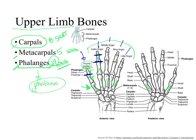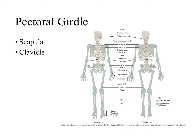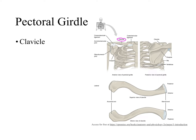Now that we've covered all upper limb bones, we look at the bones that attach the upper limb to the axial skeleton — referred together as the pectoral girdle, also called the shoulder girdle because these bones are found in the shoulder. The two bones are the scapula and the clavicle. The clavicle is commonly known as the collarbone, but in anatomy, we use the anatomical name: clavicle.